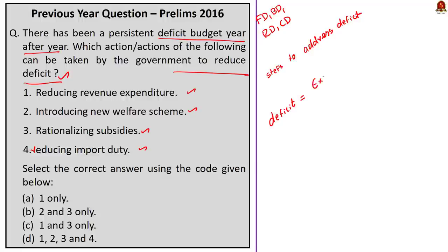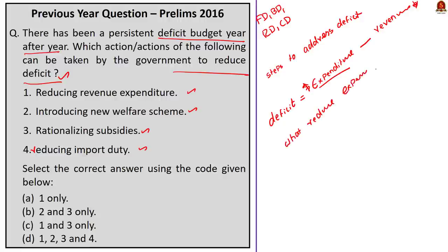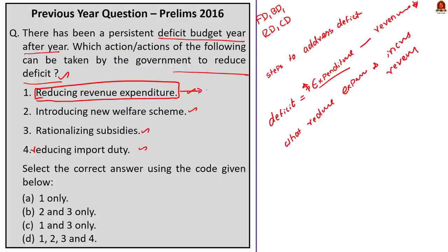What does deficit mean? When there is a deficit in the budget, it basically means there is more expenditure and less revenue. So to reduce deficit, we must reduce expenditure and increase revenue. Of the four points given, we have to see which will help reduce expenditure and increase revenue. Let us take up the first action: 'Reducing revenue expenditure.' This is very direct — to reduce deficit, we have to reduce expenditure. So the first action is correct.